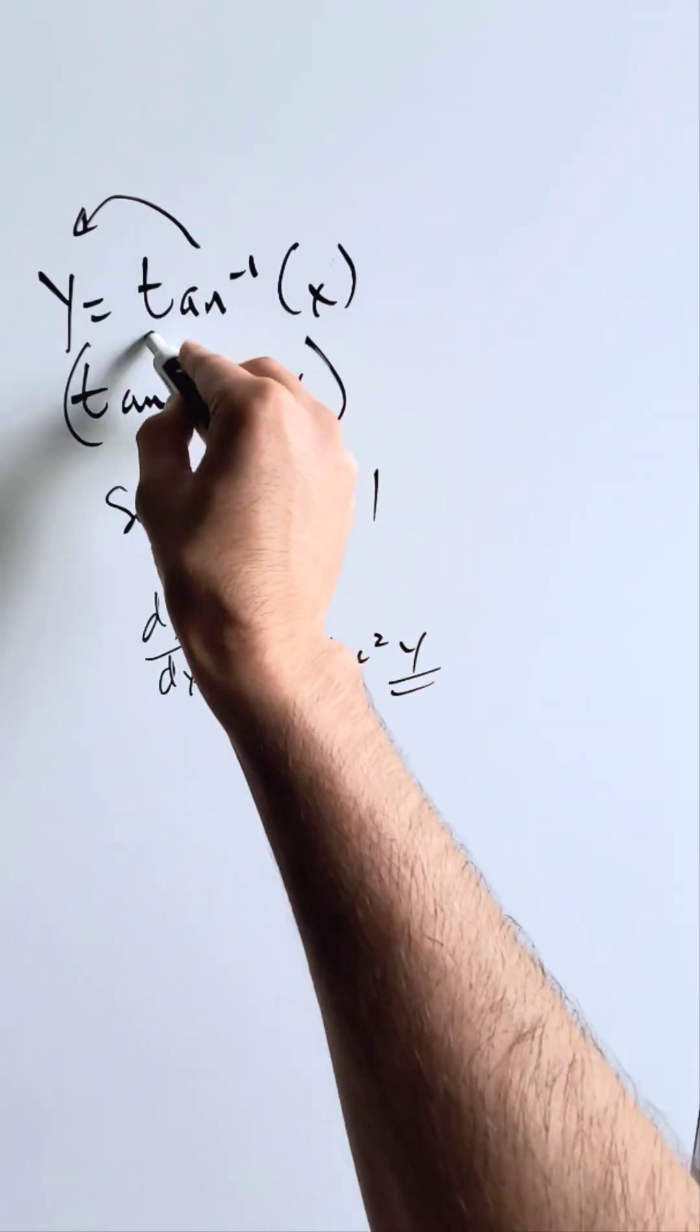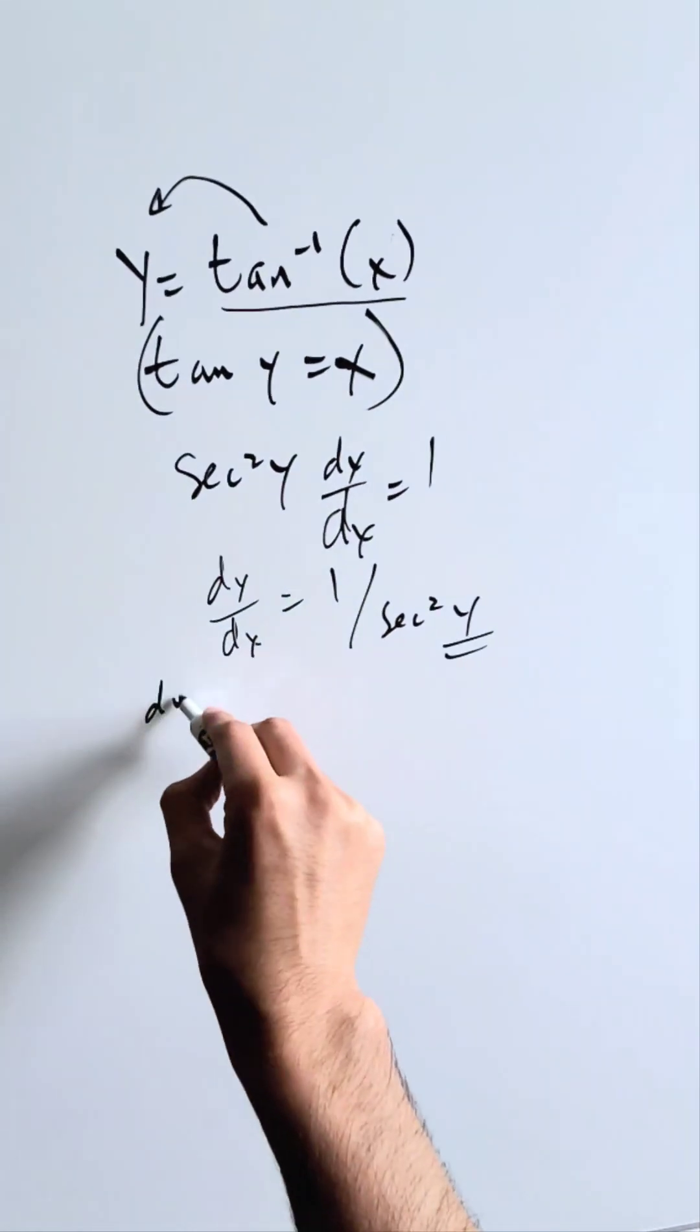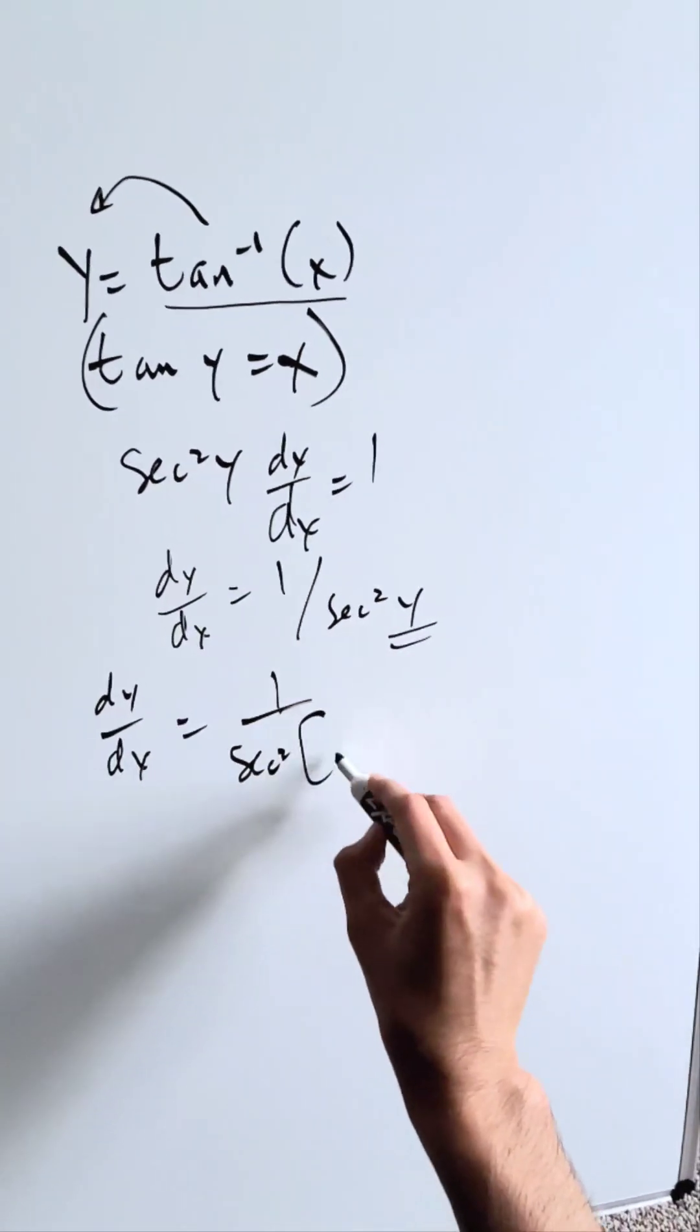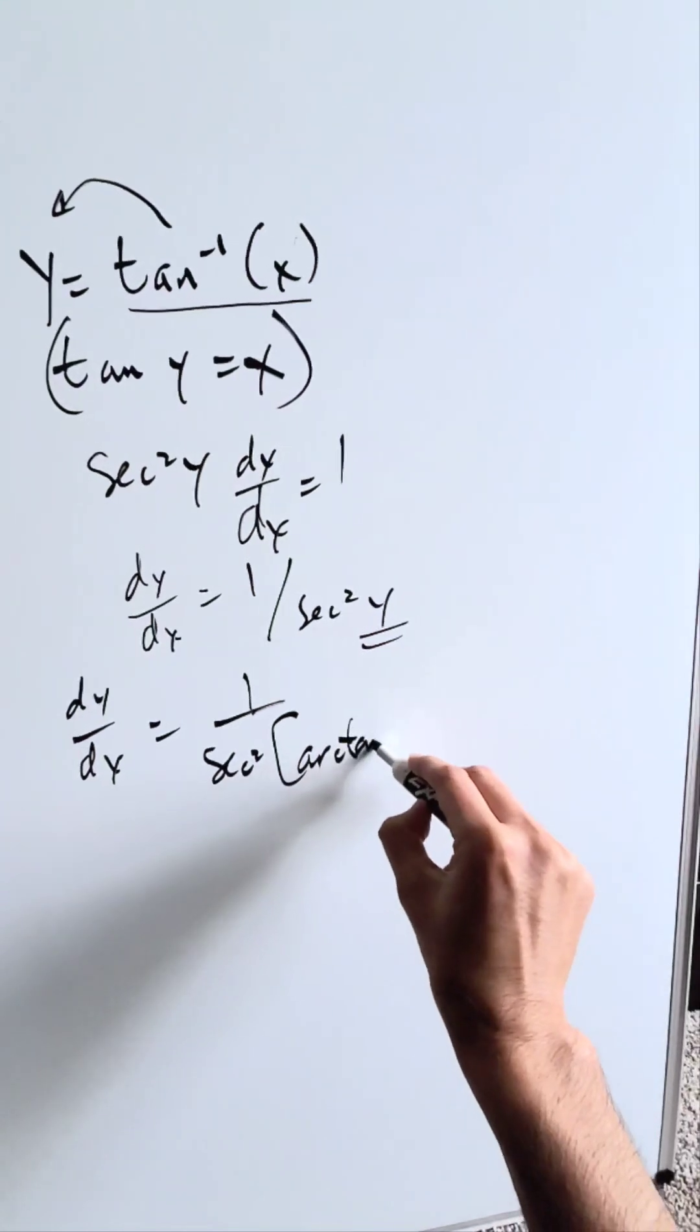Look here at what y is equal to. It's equal to this item here at the beginning. I have dy over dx is equal to 1 divided by secant squared of arctan or inverse tan x.